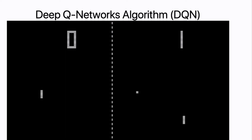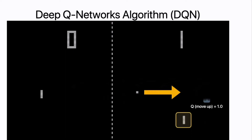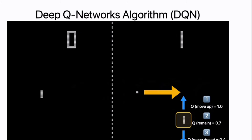In Pong, given that the ball — let's call it a dot — is going towards the right and you are this player on the right side, what actions should you do? Naturally you'd know to move up. For moving up, let's say the Q value is 1.0; you could also remain there, or move down. Because it's using a greedy algorithm, you pick the highest value, which in this case is 1.0. So there's a high chance you will move up.